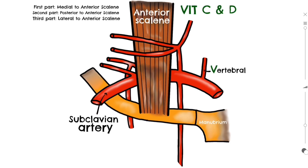Next we have the internal thoracic artery. While the vertebral artery runs upwards, the internal thoracic artery travels inferiorly behind the ribs. It used to be called the internal mammary artery because it supplies the anterior chest wall and the breasts via many of its branches. Around the sixth intercostal space it bifurcates into two terminal branches: the superior epigastric and the musculophrenic.